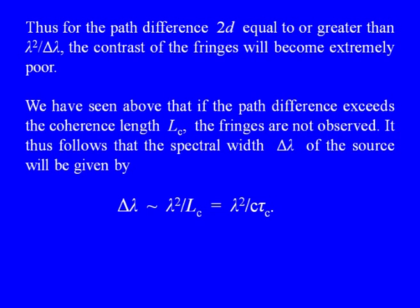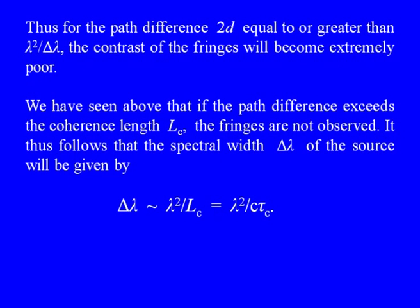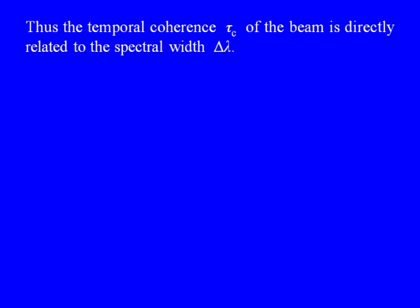For path difference 2d equal to or greater than lambda squared divided by delta-lambda, the contrast of the fringes becomes extremely poor. Since the fringes are not observed when the path difference exceeds the coherence length Lc, it follows that the spectral width delta-lambda of the source is given by delta-lambda of the order of lambda squared divided by Lc, which equals lambda squared divided by c times tau-c. Thus, the temporal coherence tau-c of the beam is directly related to the spectral width delta-lambda of the light source. This is a very interesting and important result.